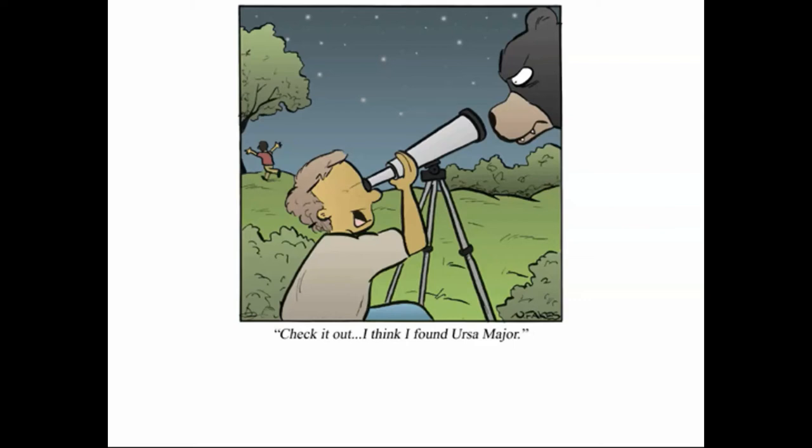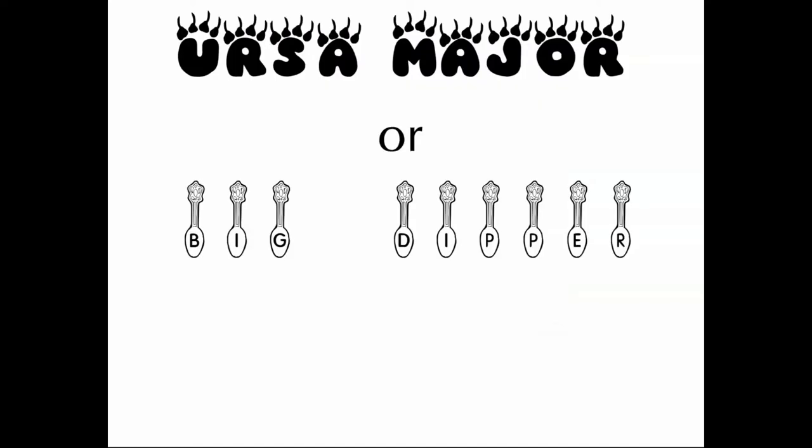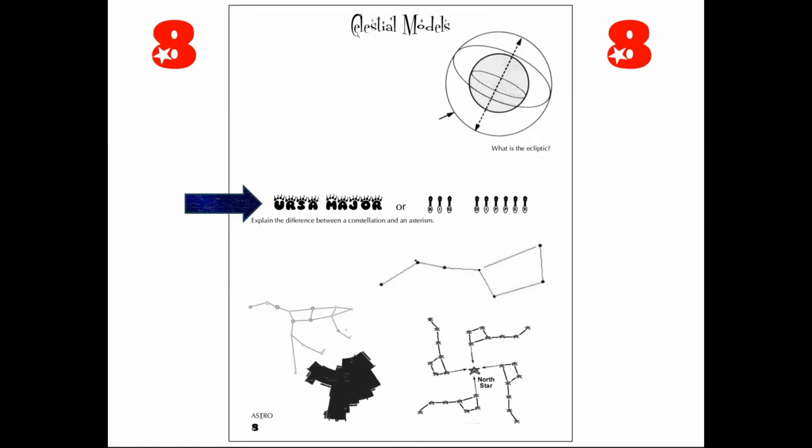Check it out! I think I found Ursa Major! Ursa Major or Big Dipper? Does it matter which term you use? Is there a rule? That is the goal of today with you. The Ursa Major or Big Dipper section here in the middle. The question here, explain the difference between a constellation and an asterism.